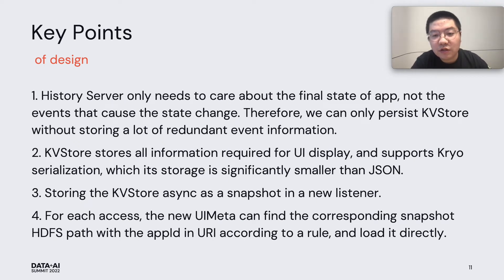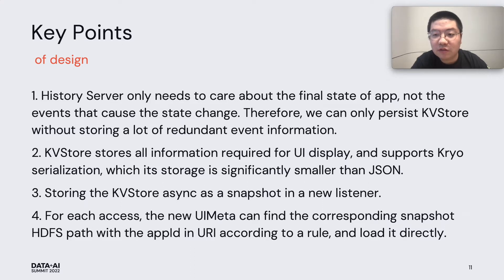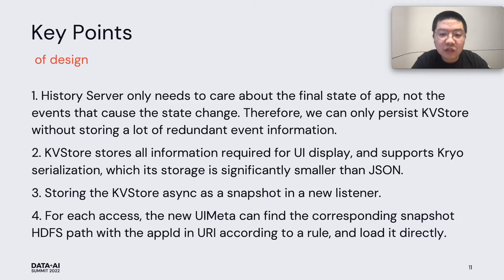For the history server, users only care about the final status of applications — they do not need to care about the specific events that caused the status change. So in the implementation, it needs a new Spark listener to serialize and persist the runtime KV store into snapshot files in the running application, instead of storing mass events to an event log file. In addition, the KV store supports serialization and the performance is significantly better than JSON.